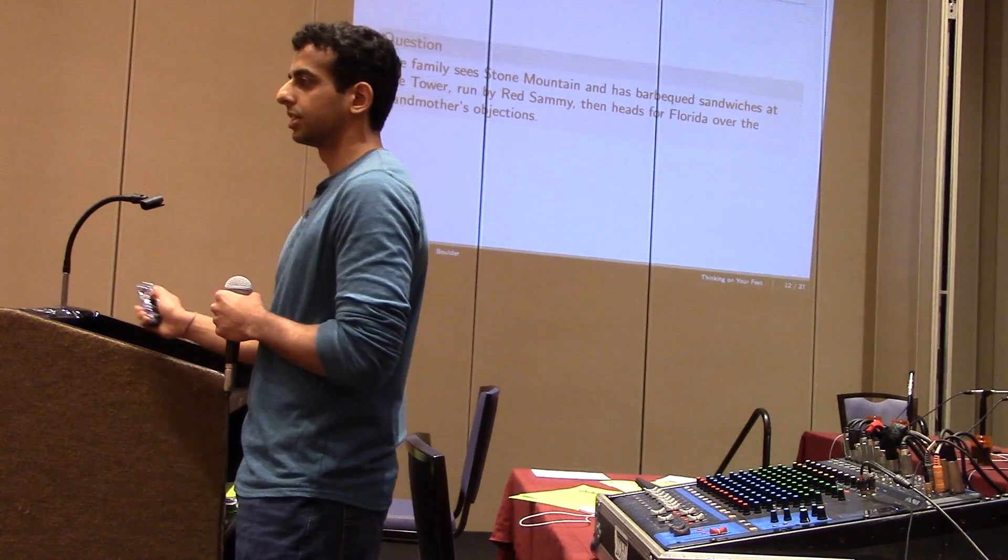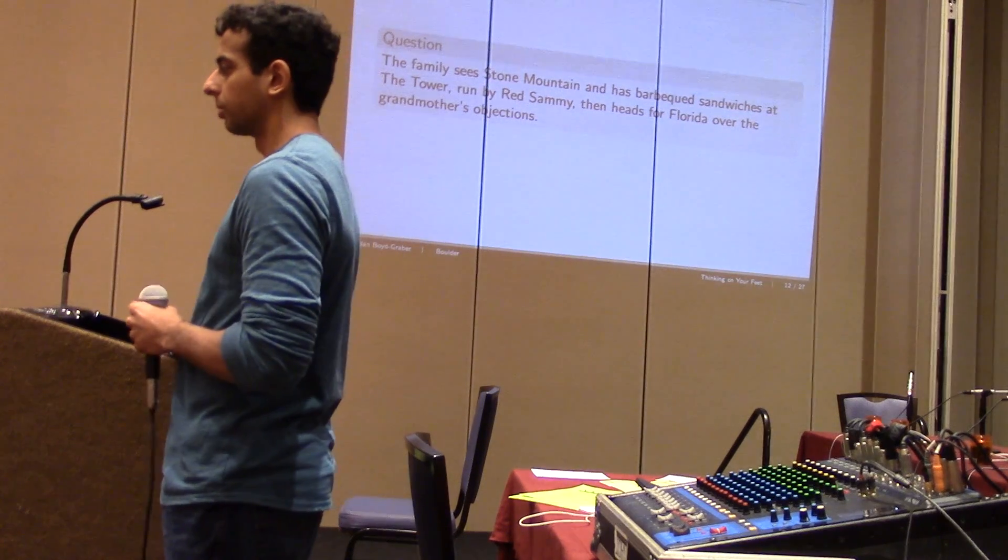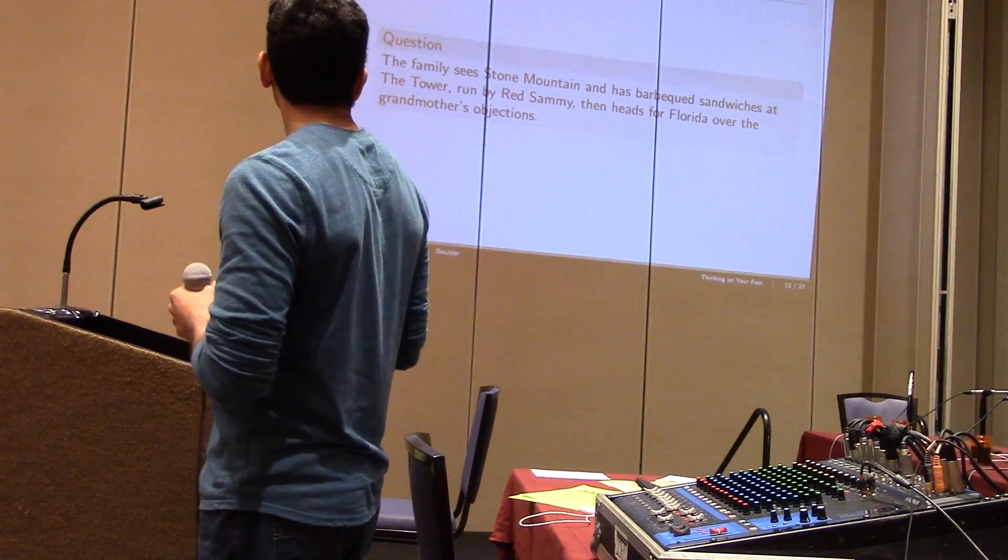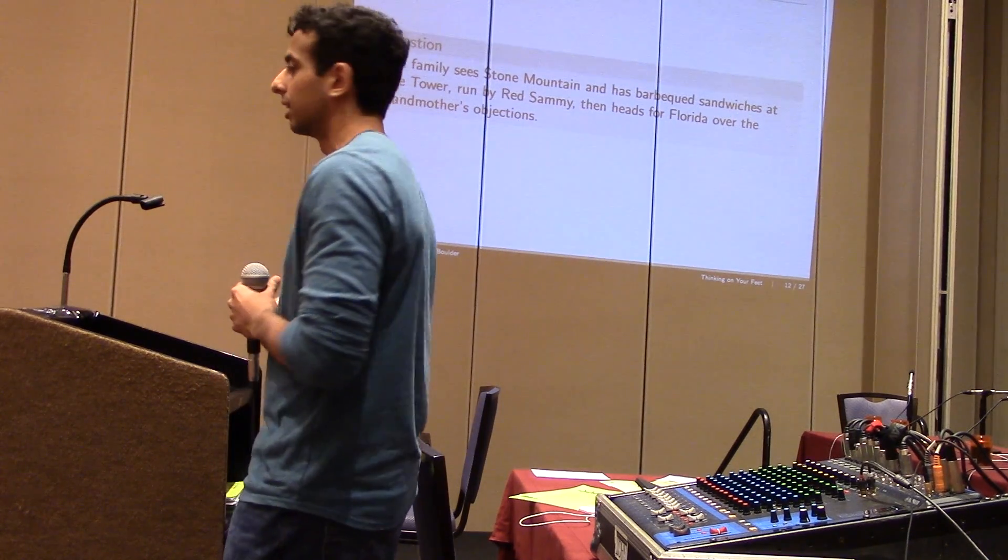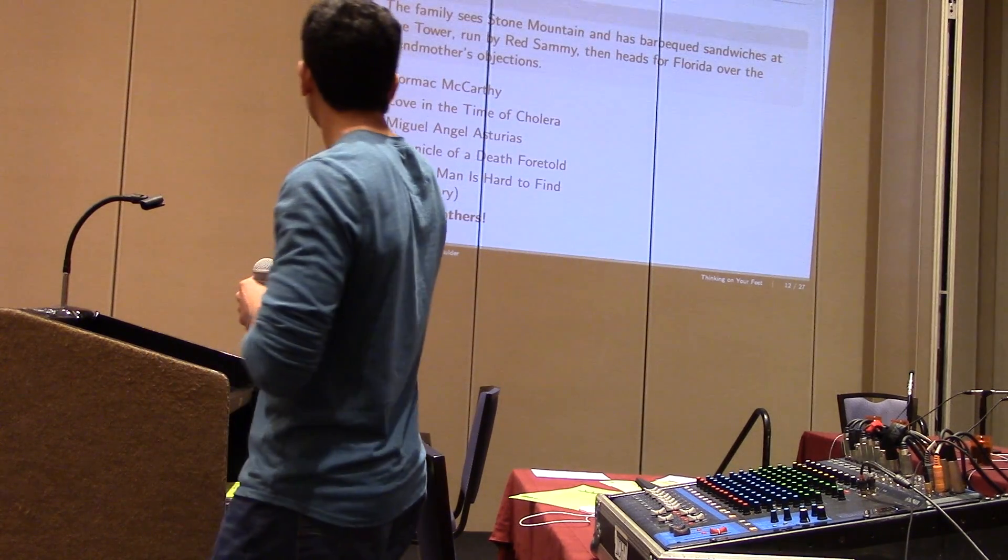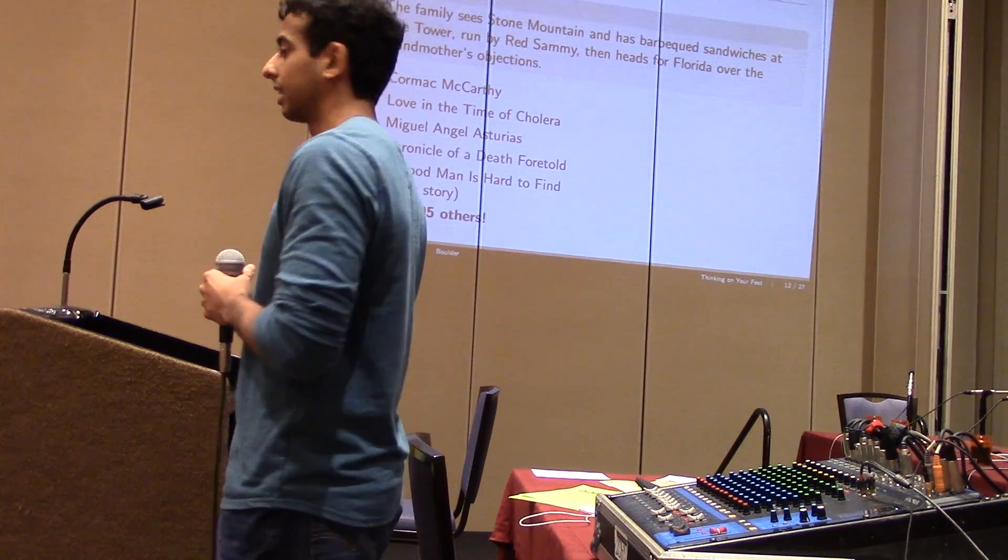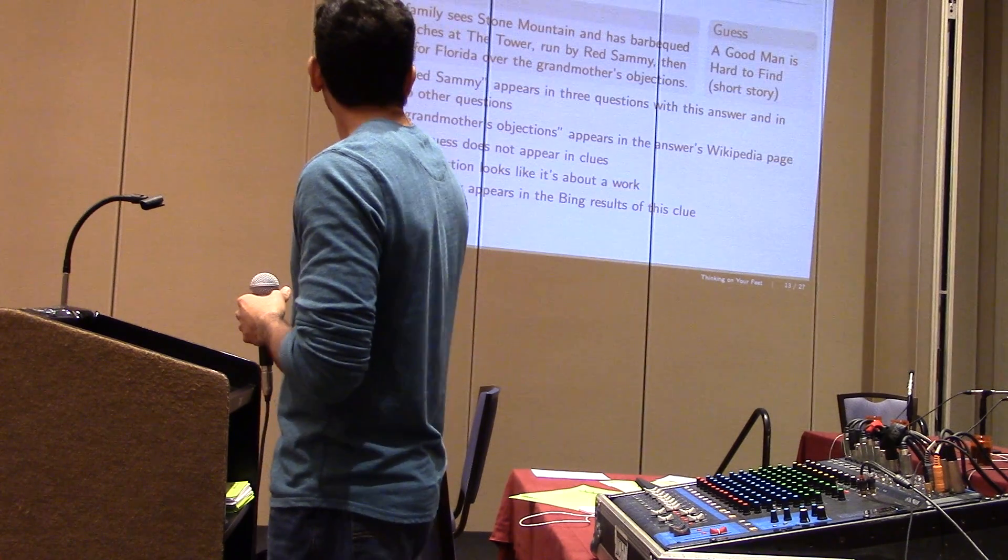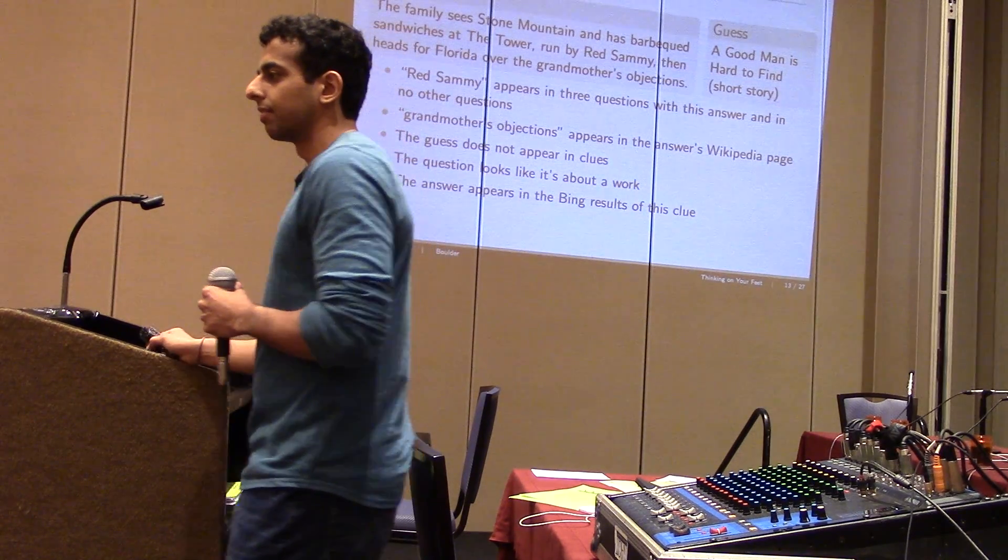Okay, so that's the first phase of our pipeline. So now given our 200 candidate guesses, how do we decide which one is the best? And how do we decide if we're confident enough to buzz in? So here we have a question on A Good Man Is Hard to Find by Flannery O'Connor. And we have some guesses that our model has given us. So A Good Man Is Hard to Find is the fifth guess in our list of 200 guesses. But how do we decide that we want to buzz in on A Good Man Is Hard to Find?